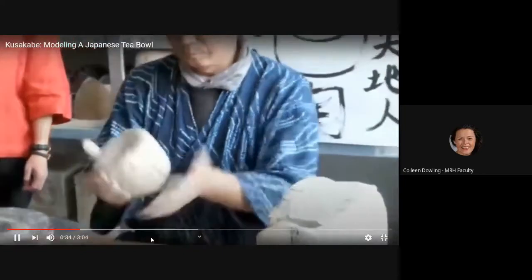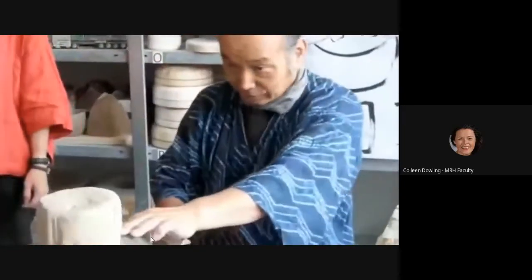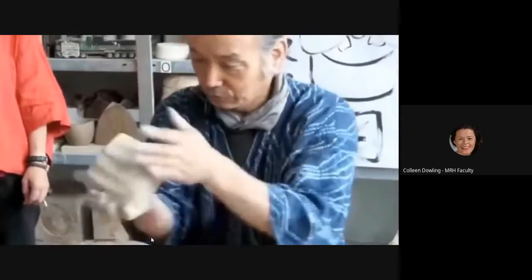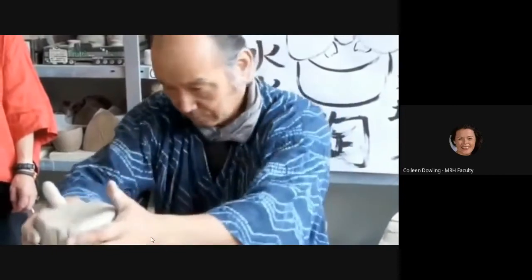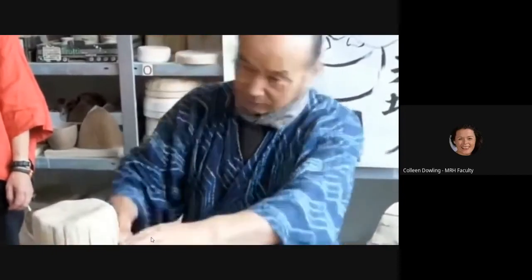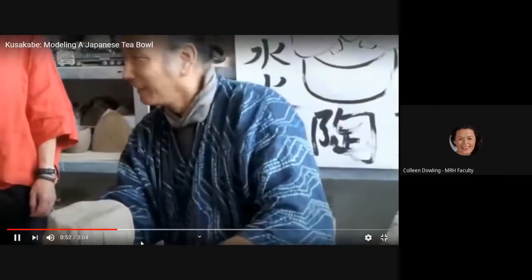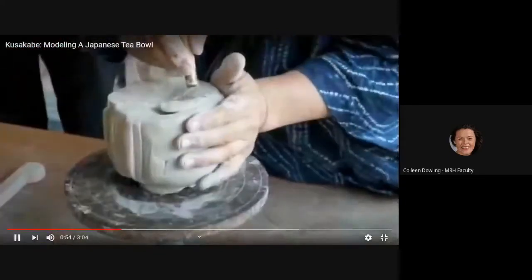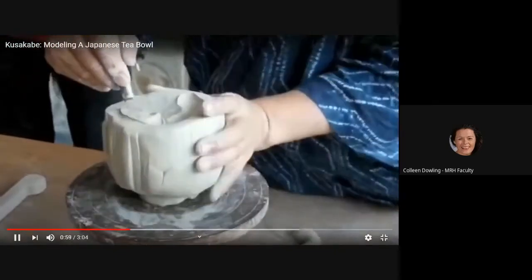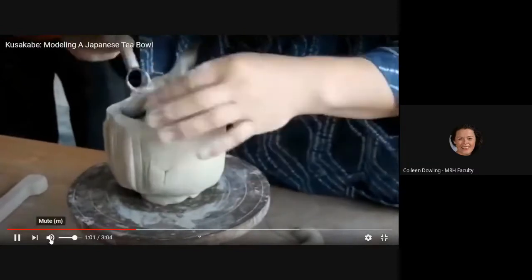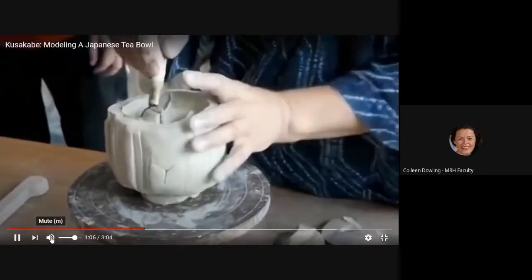So he's applying texture from the start and he's using a lot more clay than we're going to use. So we don't have that loop tool but we're going to make something today if you want to do this hollowing method.